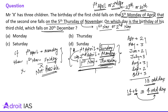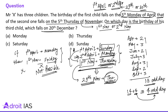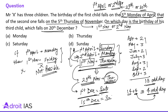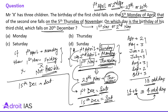If 1st November is Thursday, then 29th November will also be Thursday (after 28 days). If 29th November is Thursday, then 1st December is Saturday. And 1st December being Saturday means 15th December — after 14 days — is also Saturday.